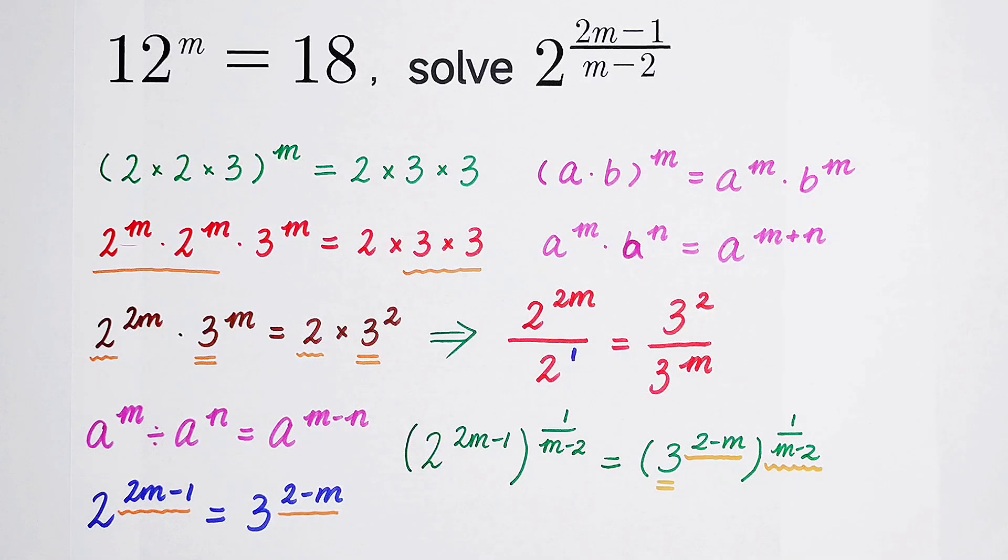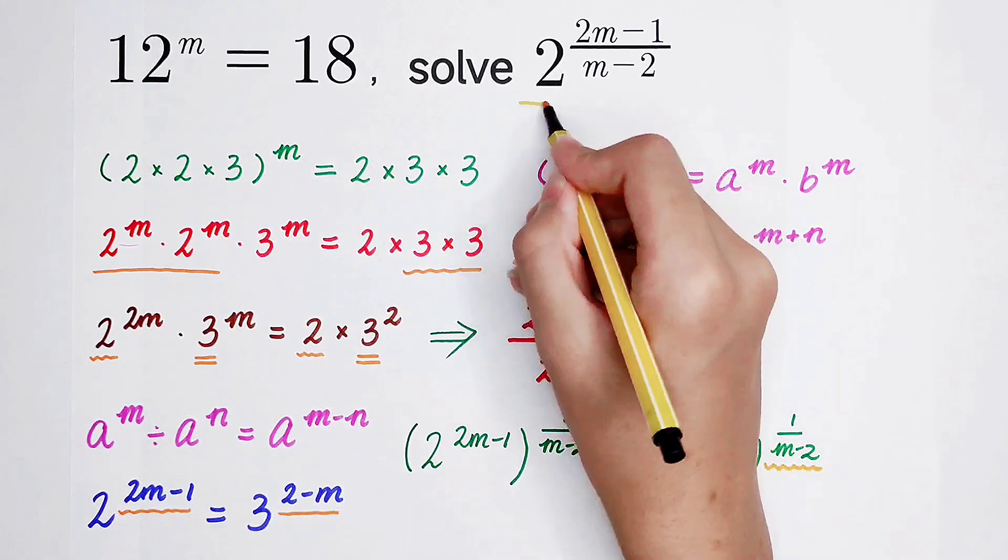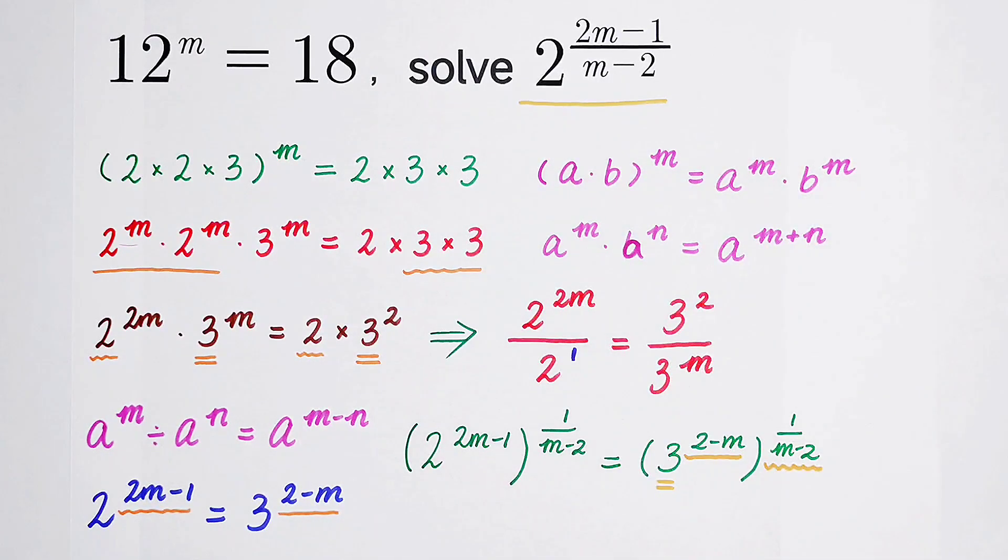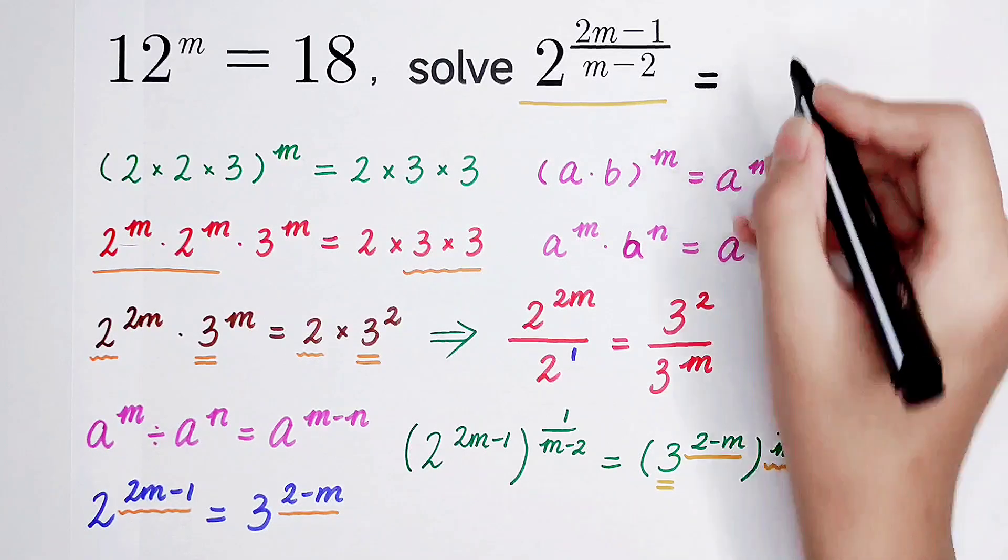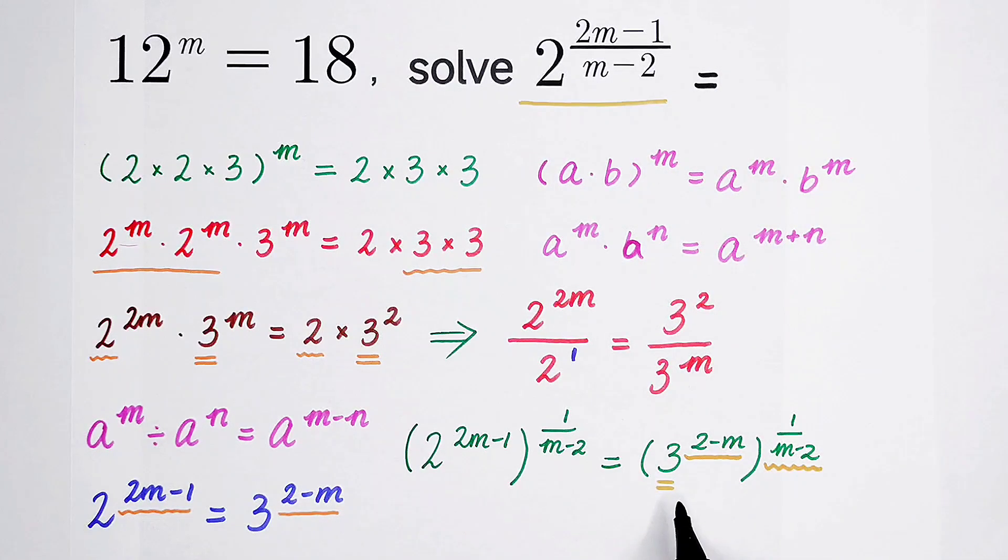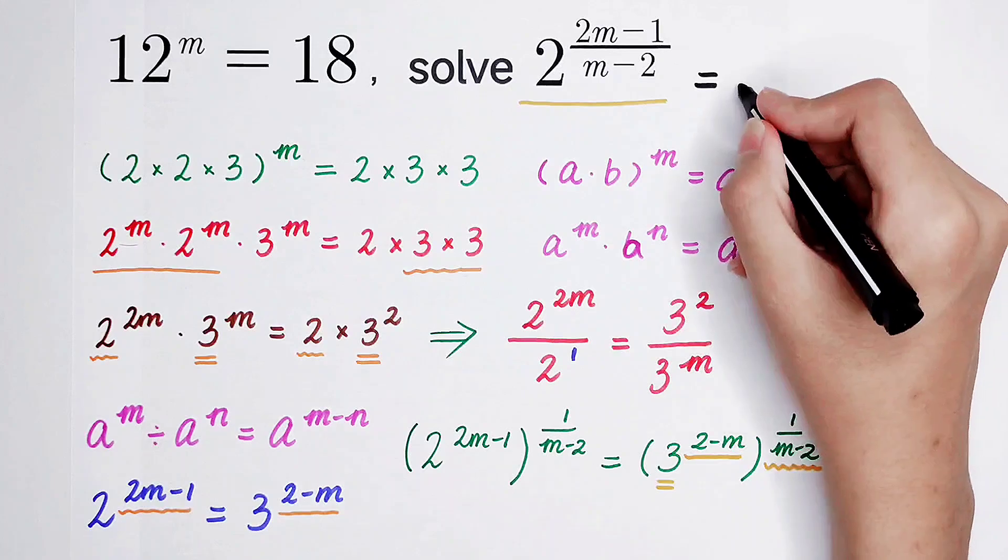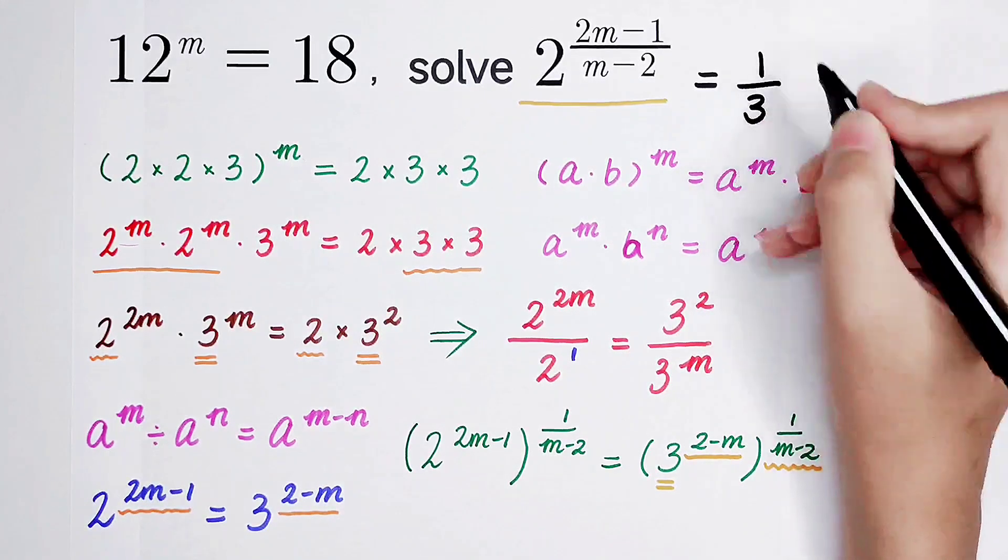And what's on the left-hand side? According to the formula, that is 2 to the power 2m minus 1 over m minus 2. So this is this. The final answer is the right-hand side. So it is 3 to the power minus 1. That is 1 third.